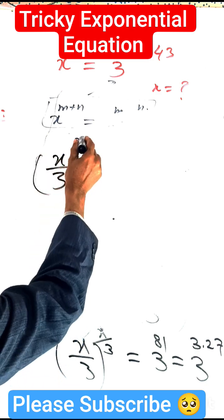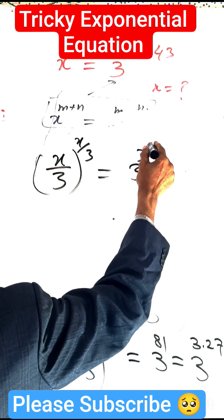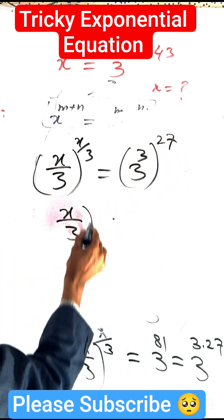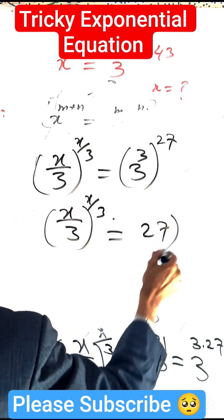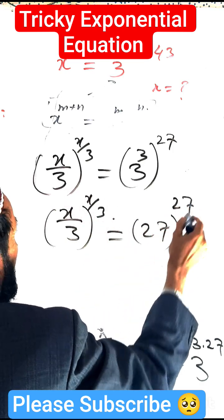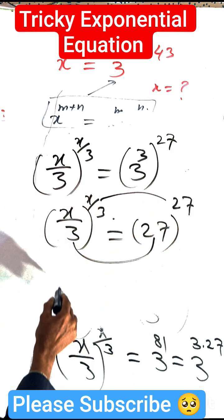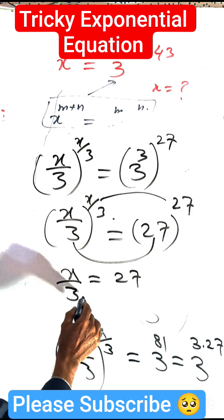x by 3 whole exponent of x is equal to 3 exponent of 3 whole exponent of 27. Now when the bases are equal, we compare the powers. So we get x by 3 equals 27.